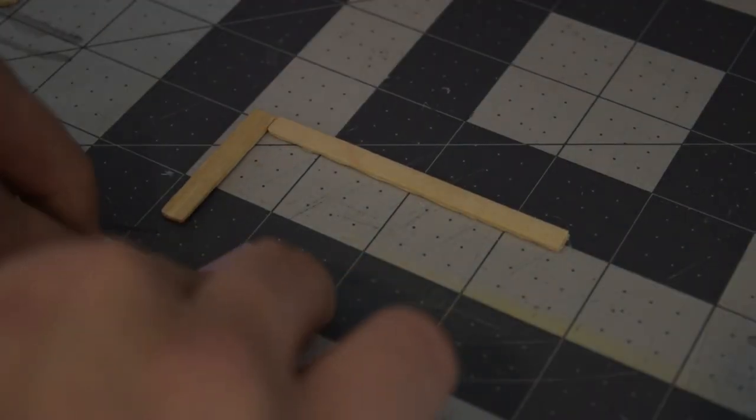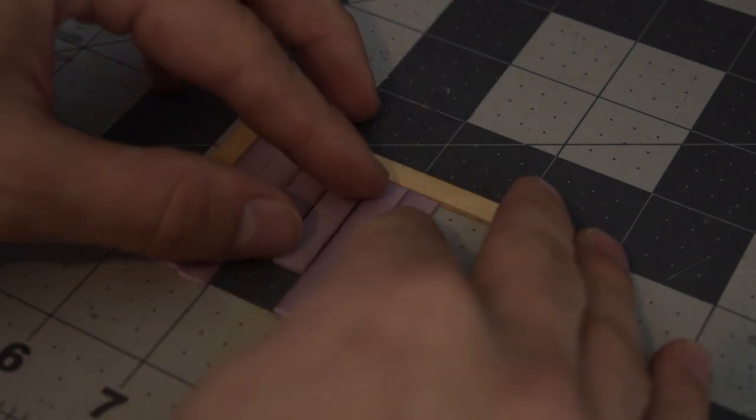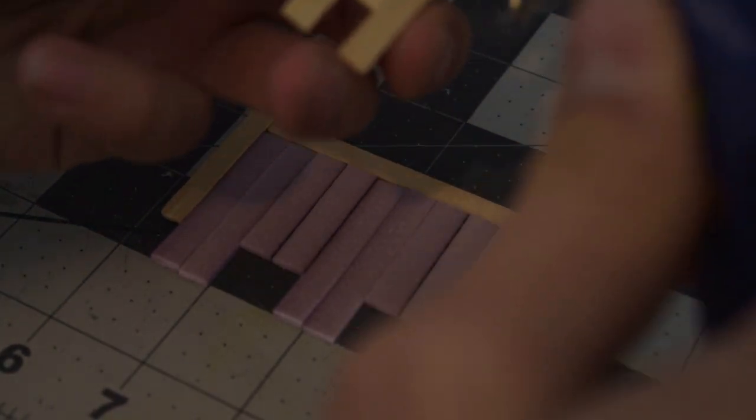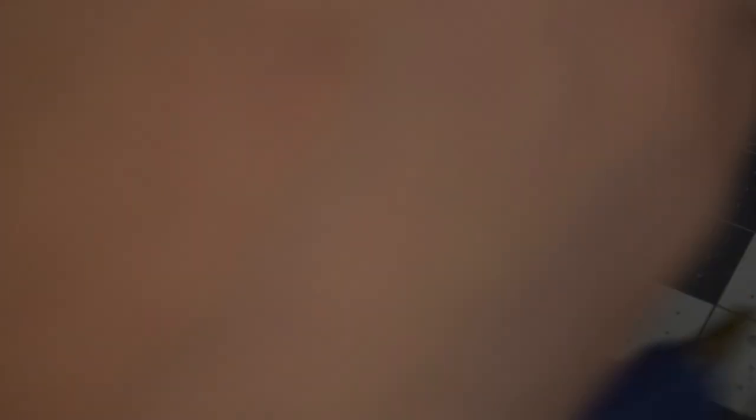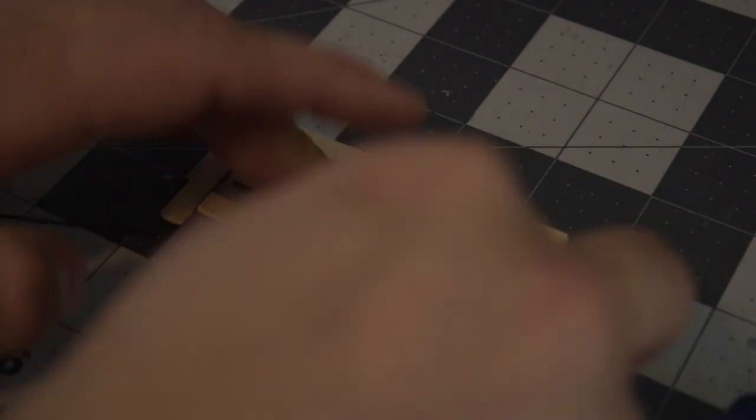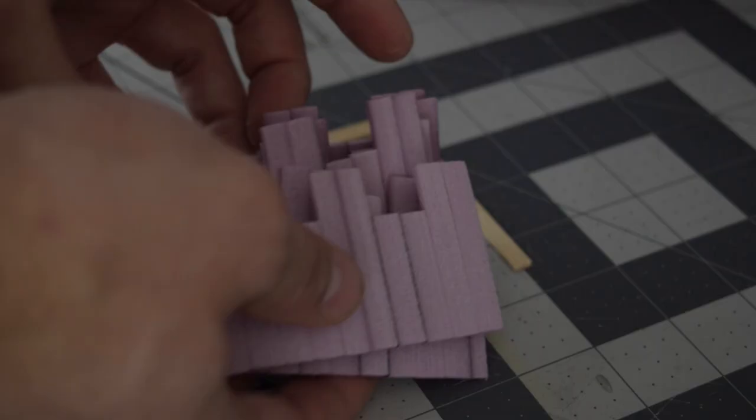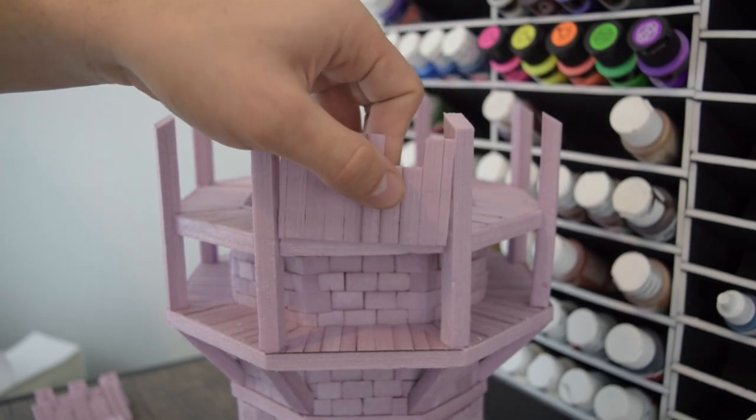So I made a jig out of coffee stirs that I glued to my mat. This gave me a guide to make it real easy to make the upper parts because they were really fiddly. And just like that, I made eight of them and attach those with glue as well.